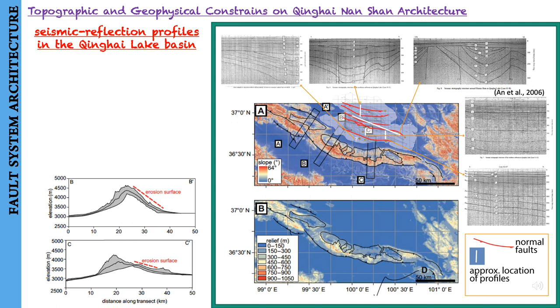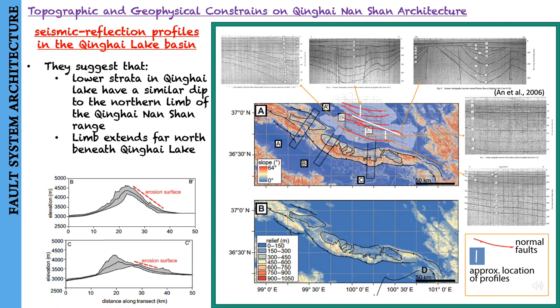Getting back to this paper, the authors suggest that the deep strata of the southern part of the Qinghai Lake Basin have a similar dip to the northern limb of the Qinghai-Nanshan, suggesting that this limb extends far north beneath the Qinghai Lake Basin. They say this augments evidence for the interpretation that the northern limb of the Qinghai-Nanshan is a relict erosion surface.